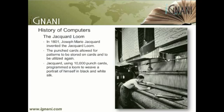Jacquard's punch card system proved to be such a useful idea that it was incorporated into the ideas of many computer scientists that followed — among them Charles Babbage, around 1830, to control his analytical engine, and later by Hermann Hollerith for tabulating the 1890 USA Census.